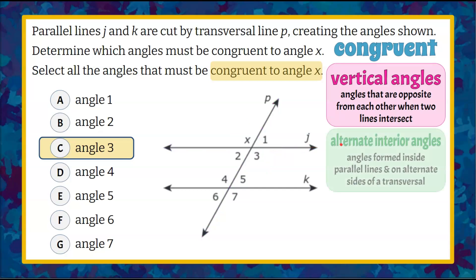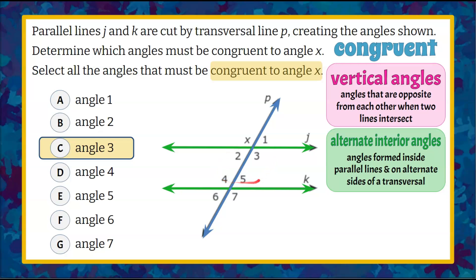The next pair of angles I want to talk about are alternate interior angles. These are angles formed inside the parallel lines and on alternate sides of the transversal. So if we look at our parallel lines J and K crossed by our transversal P, the four interior angles are right here. We already know that angle 3 is congruent to angle X.